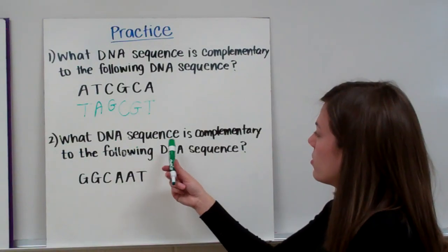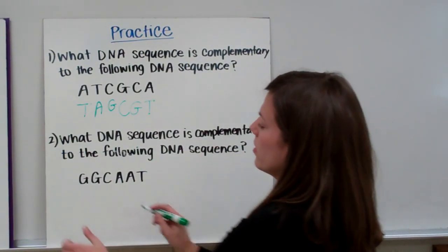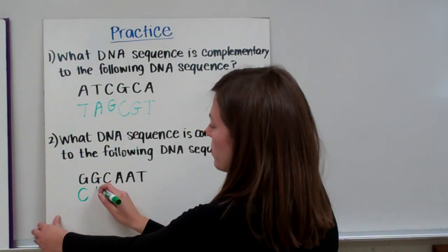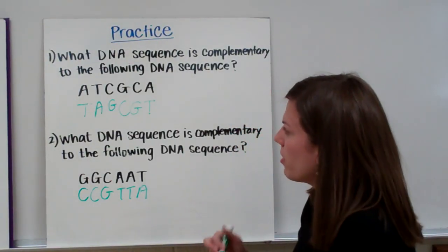Second question, what DNA sequence is complementary to the following DNA sequence? They give you G, G, C, A, A, T. So again, G binds with C, G binds with C, C binds with G, A binds with T, A binds with T, and T binds with A. And there you go. Those are your complementary strands.